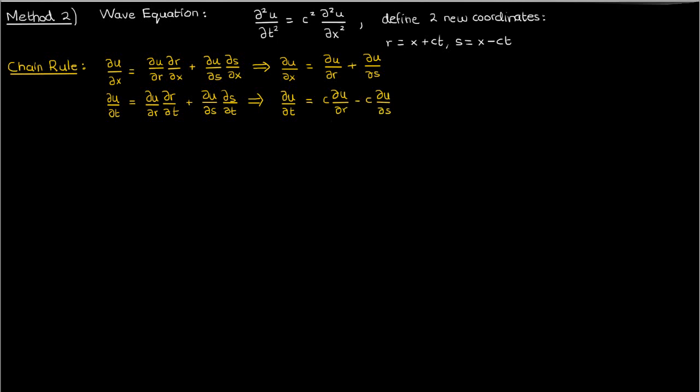We can't just stop here though, because we only have the first partial derivative so far. We need to go further and compute the second partial derivatives as well, since those are the ones that appear in the wave equation after all. So let's apply the chain rule again to find the second partial derivatives. Keep in mind that du/dr and du/ds are still both functions of r and s, so we have to differentiate both with respect to r and s.